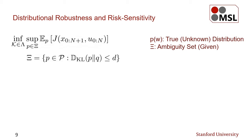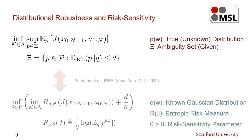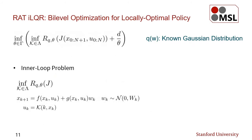This problem by itself is intractable due to maximization with respect to the unknown distribution p. Therefore, we leverage mathematical results shown in control theory to transform the original problem into an equivalent risk-sensitive optimal control problem under the known Gaussian distribution q. As a result, we obtain a bi-level optimization problem with respect to the control policy kappa and the risk-sensitivity parameter theta. In this formulation, the inner-loop problem is the minimization of the entropic risk measure, which has been studied in control theory. Note, however, that this minimization is still intractable in general due to non-linearity in the dynamics and the closed-loop nature of error control.